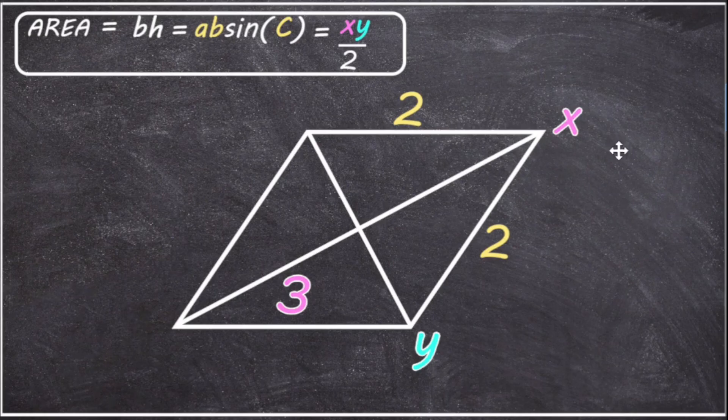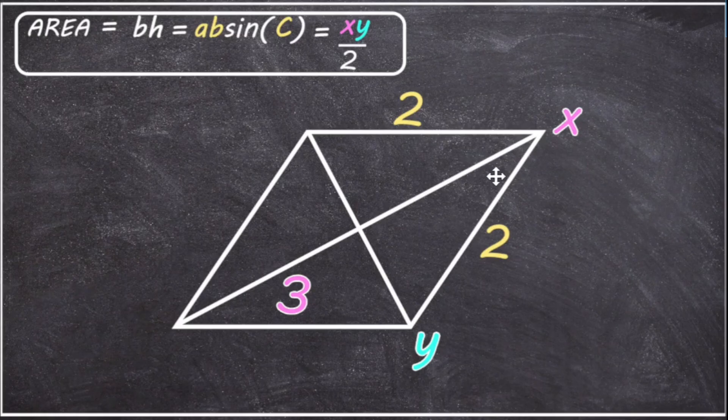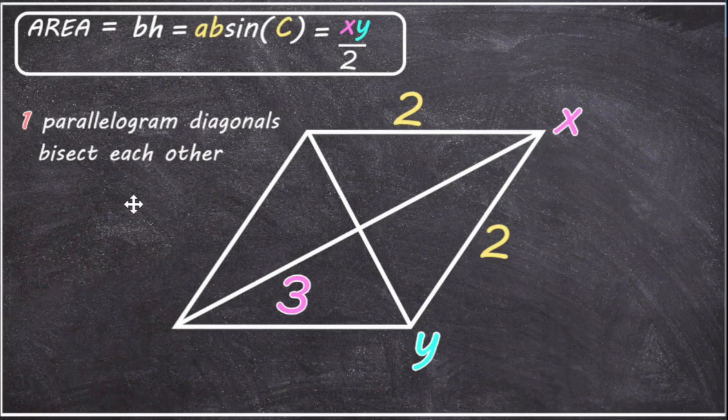Now if you think of each diagonal as being split by the other diagonal, that is, the X diagonal has been divided into two separate lengths by the Y diagonal, and the Y diagonal has been divided into two separate lengths by the X diagonal. We can use one parallelogram property to figure out what those lengths are. Here's the first property. Parallelogram diagonals bisect each other, and that means they cut each other exactly in half.